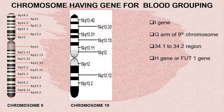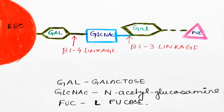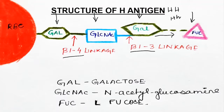In previous videos we had discussed that the H gene, present on the q arm of the 19th chromosome around the 13.3 region, is responsible for the production of H antigen. This antigen has galactose, N-acetylglucosamine, and galactose again in beta 1,4 and beta 1,3 linkages. In the presence of the H gene in the pure dominant or hybrid form, L-fucose is added to this precursor molecule to give rise to H antigen.